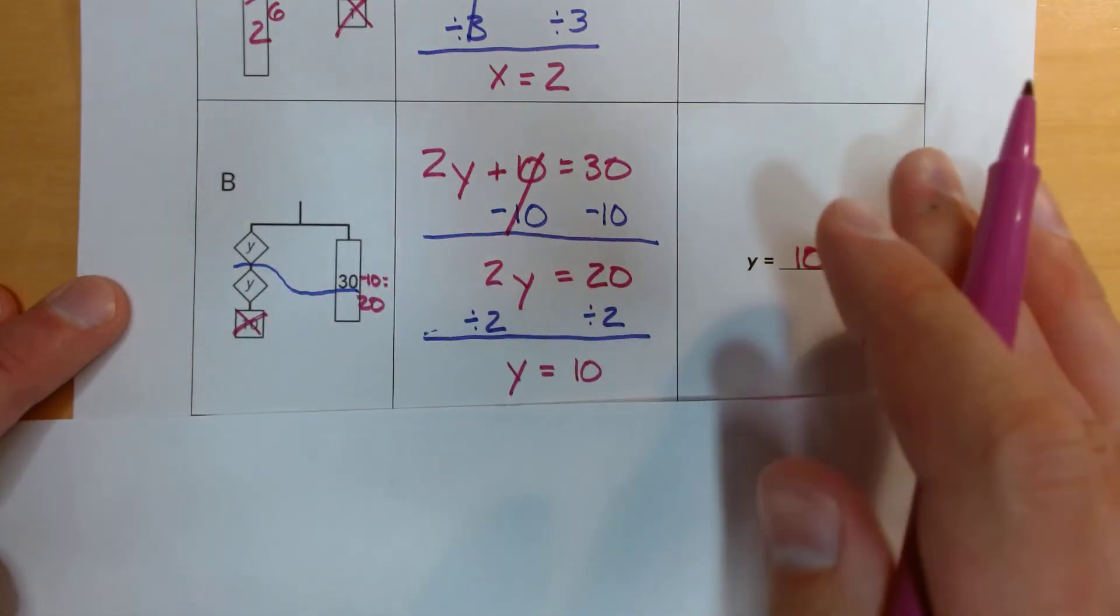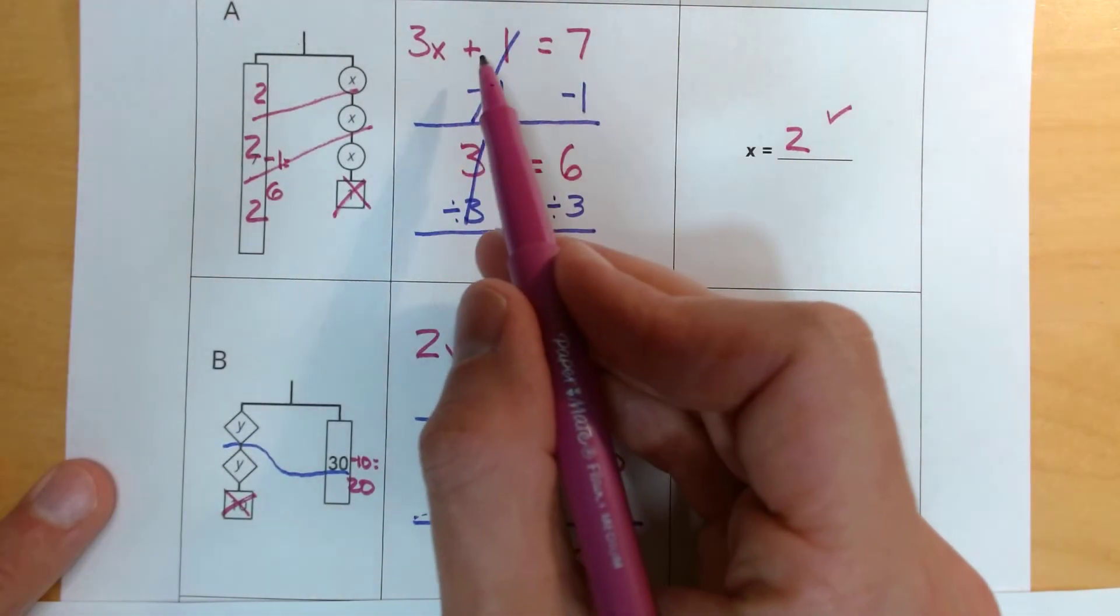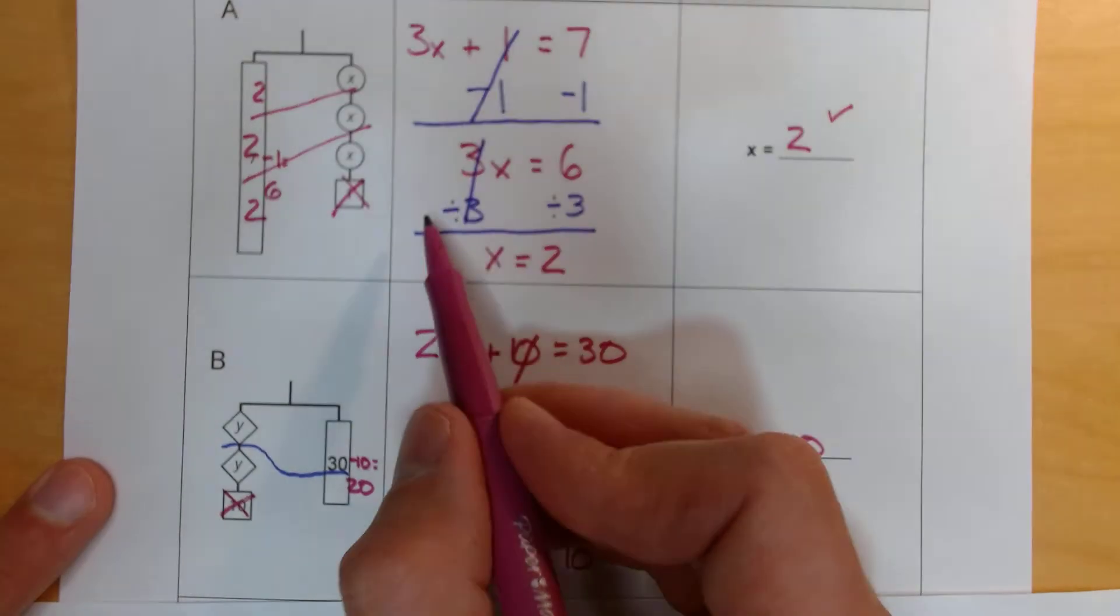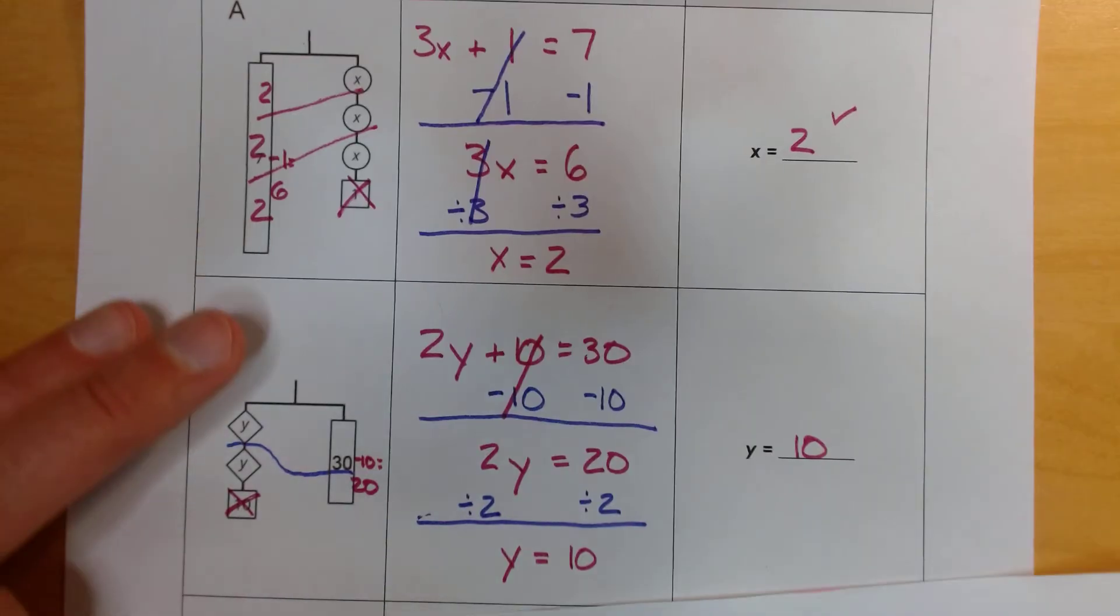All right, let's take away the tape diagrams, because now we've got a little pattern here. We start by removing our addition here by doing subtraction. So we're going to start by subtracting away the number that's being added. And then we use a little division to split how many x's we have here into equal groups. So let's try one.